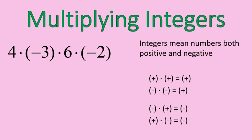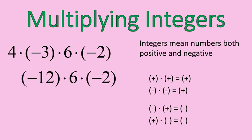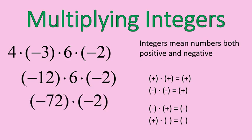Let's do a quick math question with this expression: 4 times negative 3 times 6 times negative 2. The parentheses around the negative number just separate them so you know it's times negative 3, not times minus 3. We start with 4 times negative 3 — a positive times a negative gives us negative 12. Then negative 12 times positive 6 — a negative times a positive gives us negative 72. Finally, negative 72 times negative 2 gives us positive 144. We end with a positive number.